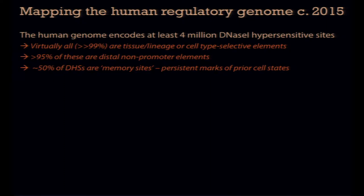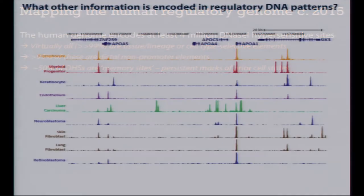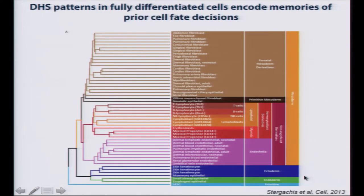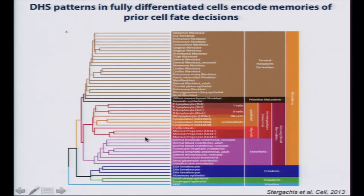This memory feature was actually uncovered very early in the history of chromatin regulatory DNA analysis by Harold Weintraub and Mark Groudine. The consequence of this memory compartment is that you can take DNase I profiles, see things turning on and off, cluster them, and actually organize cell and tissue types in a way that recapitulates the structures and fate decisions that we know were made very early in development — for example, partitioning of the blood and endothelia. All of that information was created just by clustering fully differentiated cells.